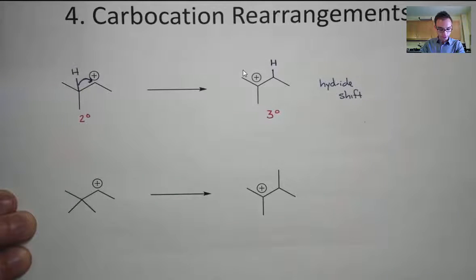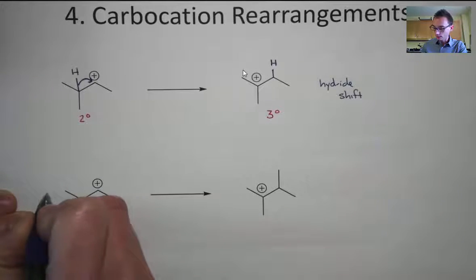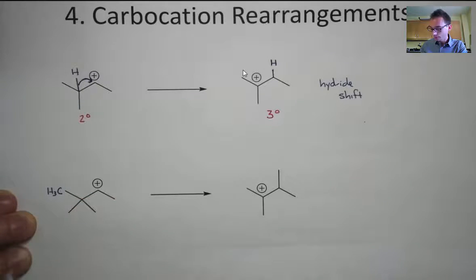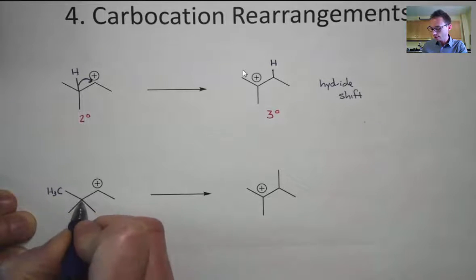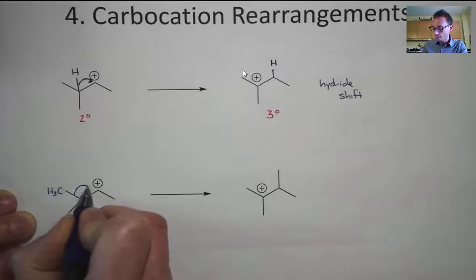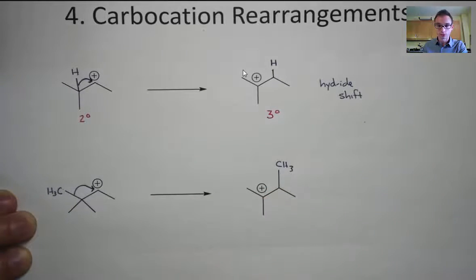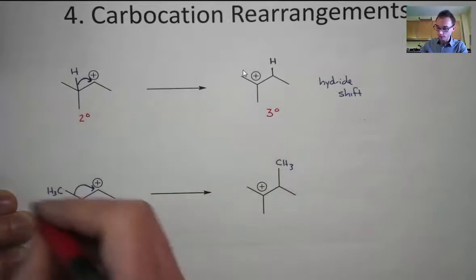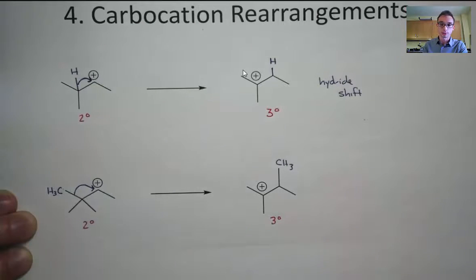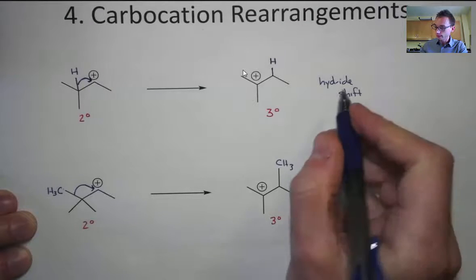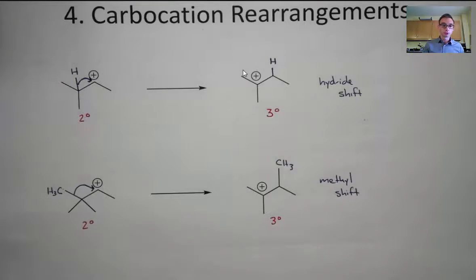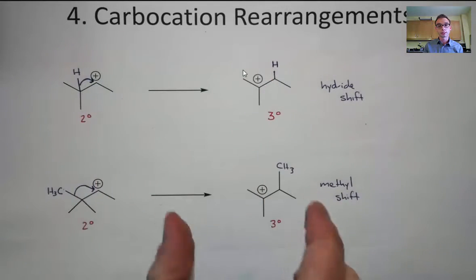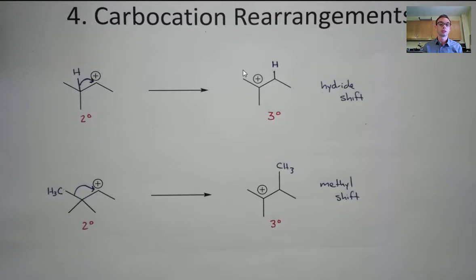There's one other thing molecules can do: if you have a secondary or primary carbocation, you can rearrange using a methyl group. If you look here, there are three methyls on this carbon and no hydrides to shift, so instead the bond between carbon and carbon can break and the methyl migrates over. We started with a secondary and ended with a tertiary carbocation — the same outcome as before. As you might guess, this is called a methyl shift. It's important as we move forward to understand these four fundamental patterns of arrow pushing, because they will help you understand mechanisms much better going forward.